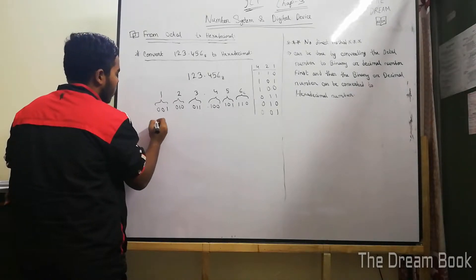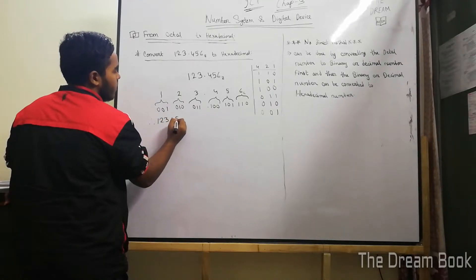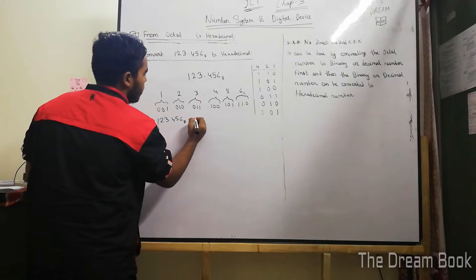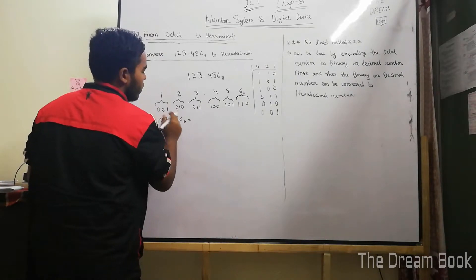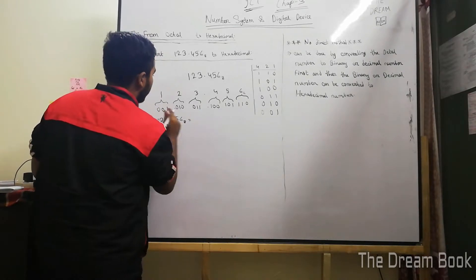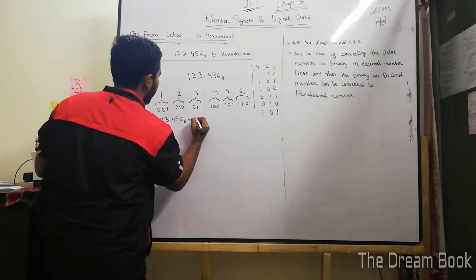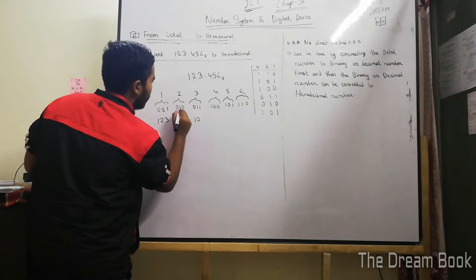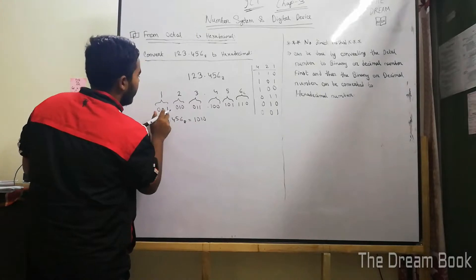Therefore, 1, 2, 3, 4, 5, 6 octal equals a binary result. We start with 1, 0, 1, 0.